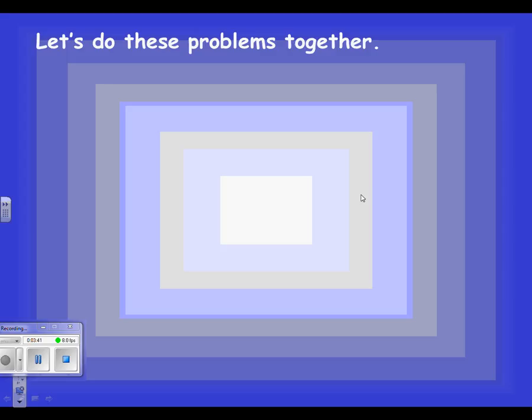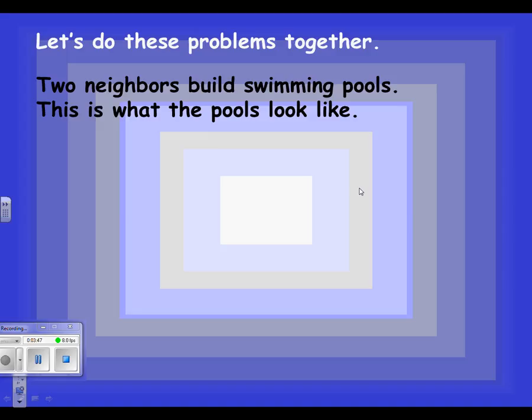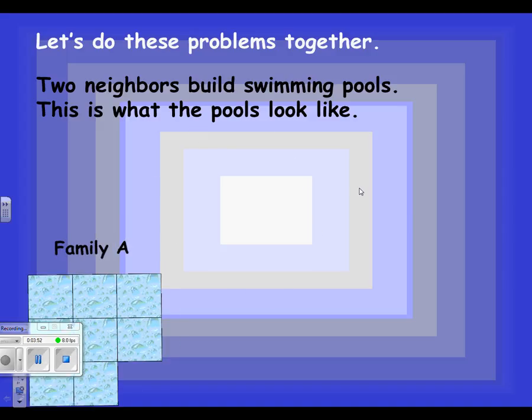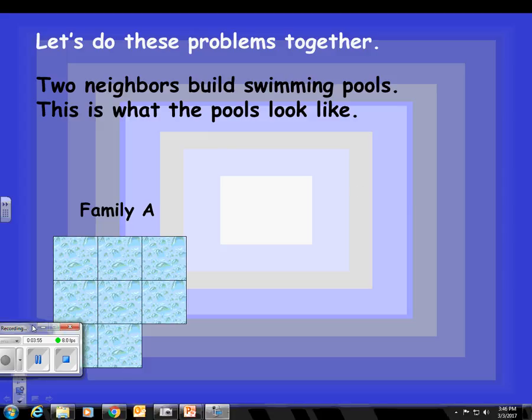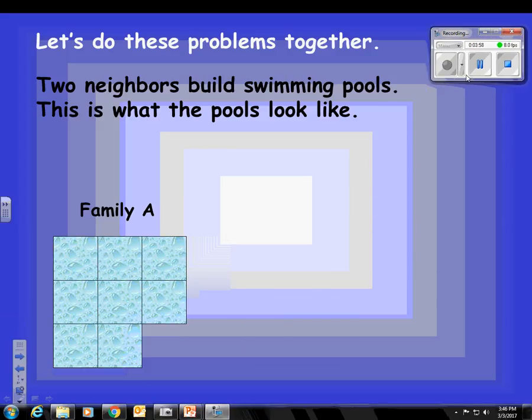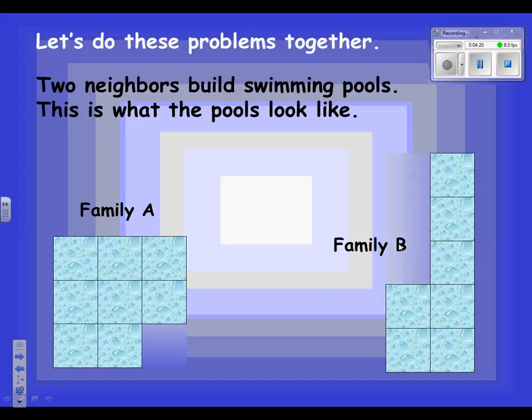Let's do these problems together. Two neighbors build swimming pools. This is what the pools look like. Family A. And again, this looks a lot like what we went over last week. Mysterious club member, what would you like to ask? Anyway, mysterious club member is mysterious and shy. So, let's just go on with Family A. Family A has this swimming pool. Family B has this swimming pool.